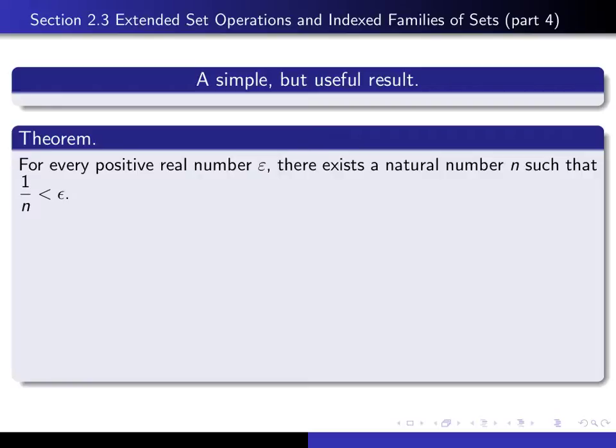So the interesting case here is when epsilon is very, very close to 0. Obviously if epsilon were more than 1, then it's a triviality. You could just simply take n to be 1.